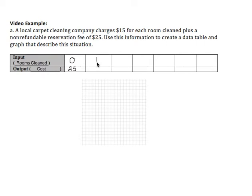But every room that I clean I add $15. So that's how my cost is changing. So $15 plus $25 gives me $40. So every room I clean the cost goes up $15.